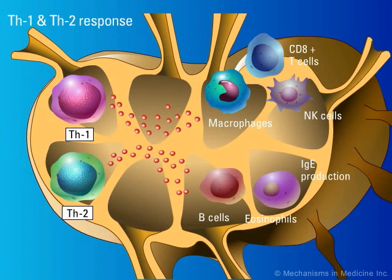Th2 responses favor activation of B cells, eosinophilia, and IgE production.